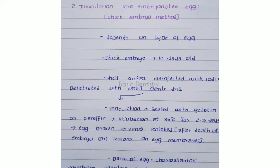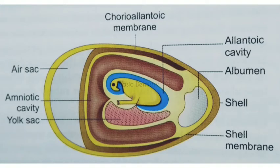The egg is incubated at 36 degrees Celsius for 2 to 3 days. After that, the egg is broken and the virus is detected when the embryo is dead or lesions are visible on the egg membranes. The parts of the egg used for inoculation are the chorioallantoic membrane, allantoic cavity, amniotic sac, and yolk sac.